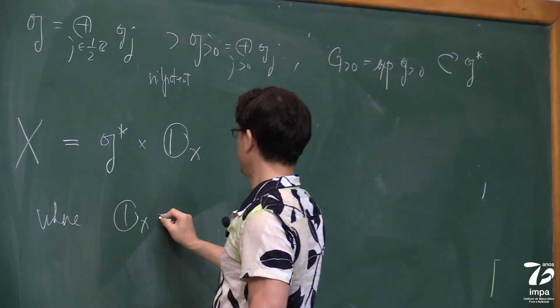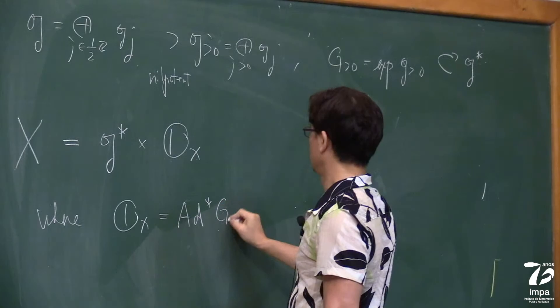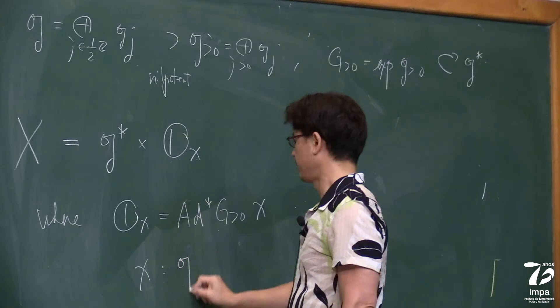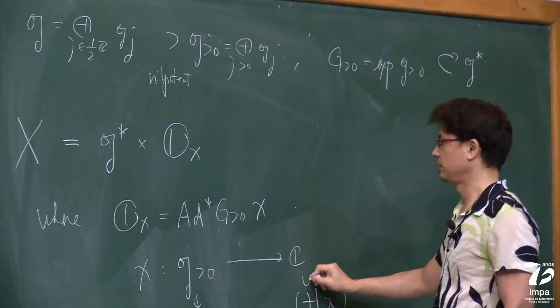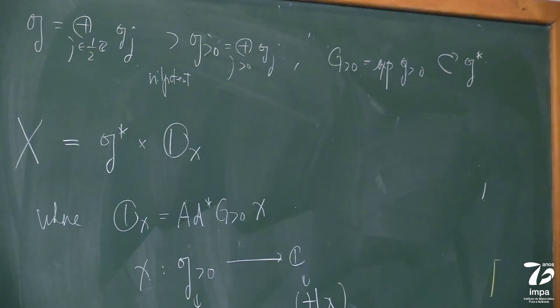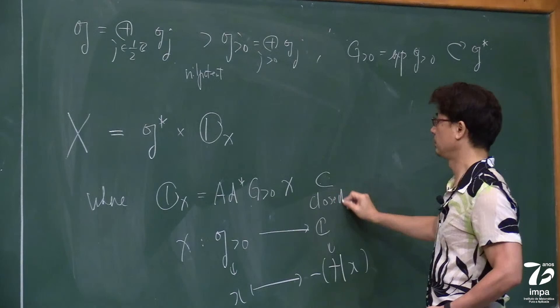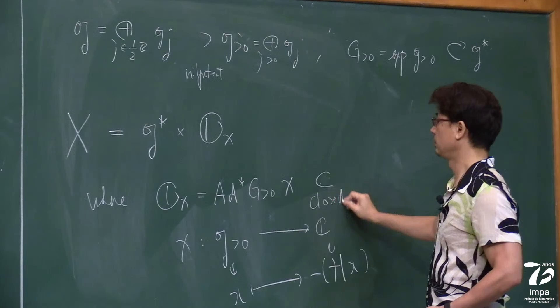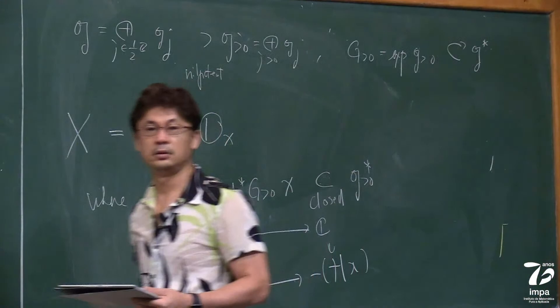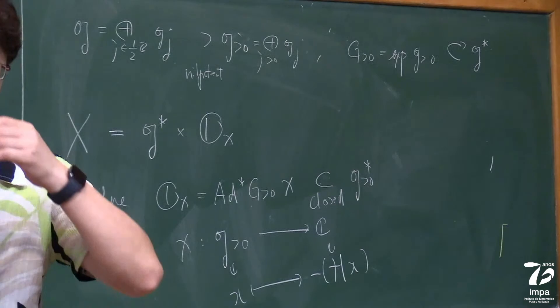We have a grading of G with respect to ad-H as already explained. I take the positive part of this grading, which is a nilpotent subalgebra. I consider the corresponding unipotent group, which naturally acts on G-star. I take the manifold to be the product of G-star and a certain orbit of this group.